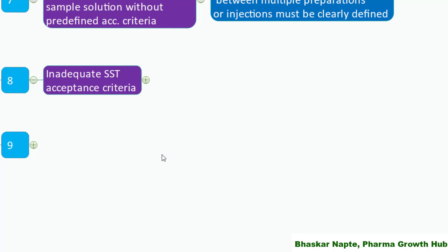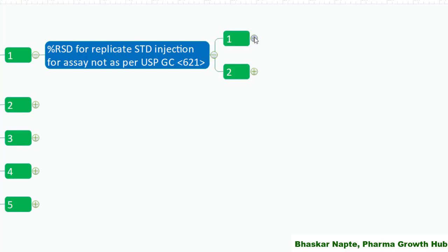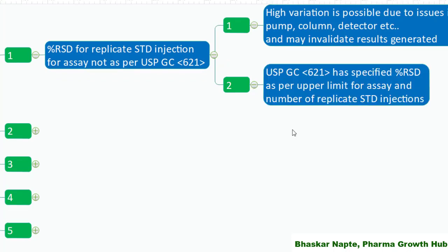Inadequate system suitability acceptance criteria — specifically, percent RSD for replicate standard injections for assay not set as per USP General Chapter 621. USP General Chapter 621 describes how to set the system suitability acceptance criteria for percent RSD for standard replicate injections based on the assay upper limit and the number of replicate injections. It is very important to set the acceptance criteria for percent RSD in line with General Chapter 621.